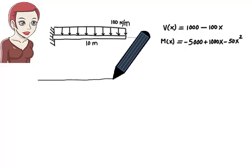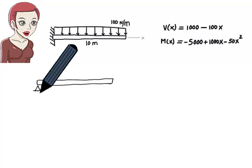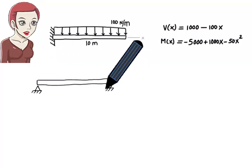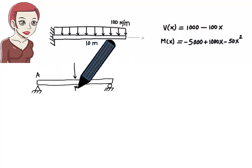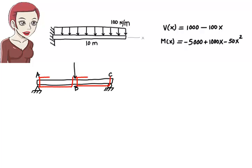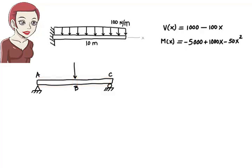For example, here there is a concentrated load at B. Since the load divides the beam into two segments, we need to write two equations for shear and two equations for moment, a pair of equations for each segment.